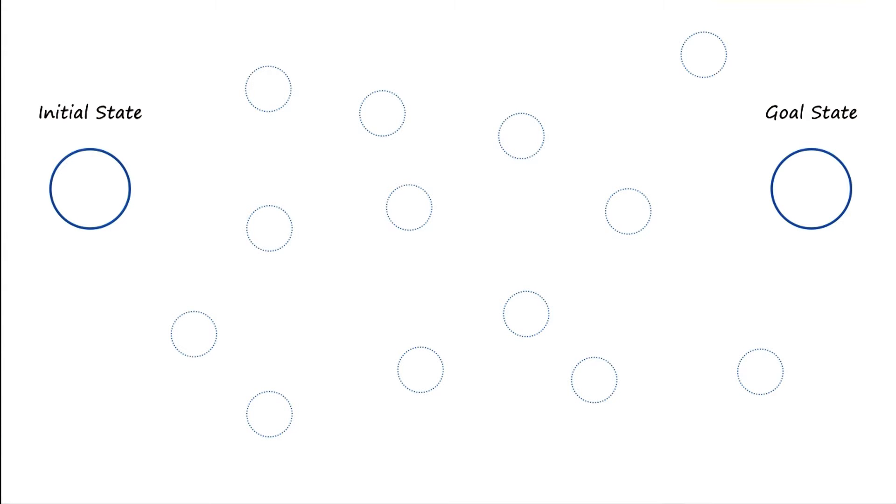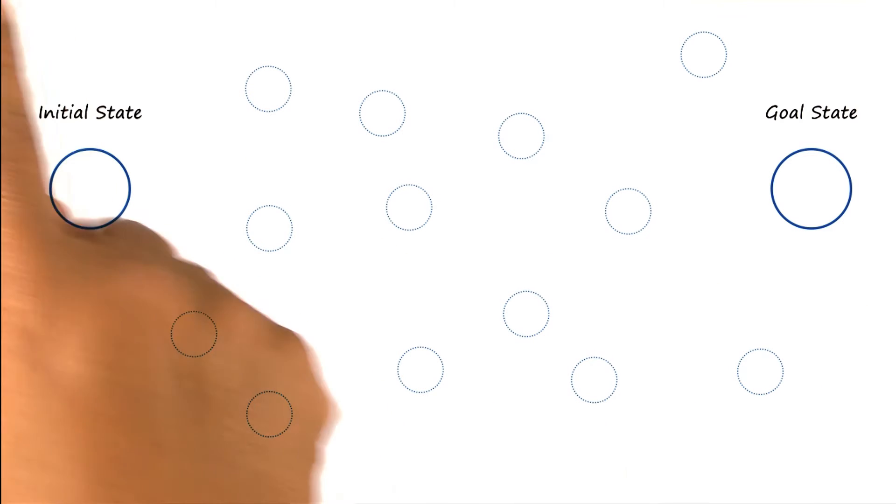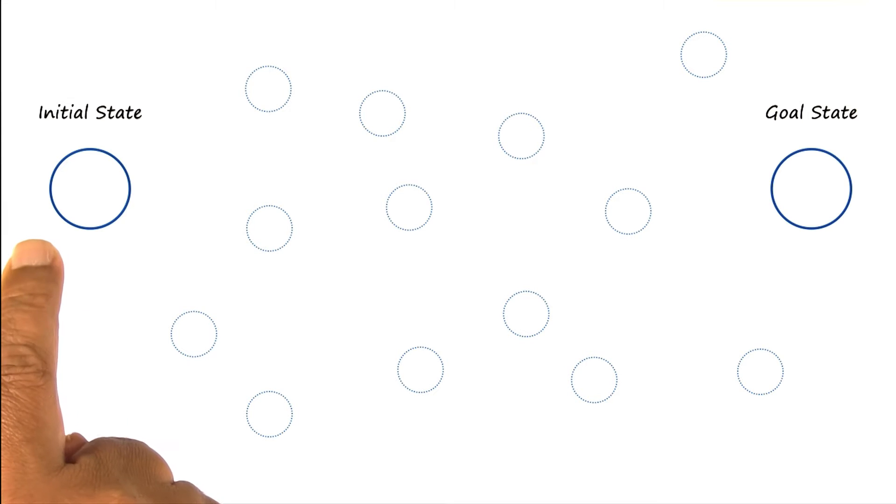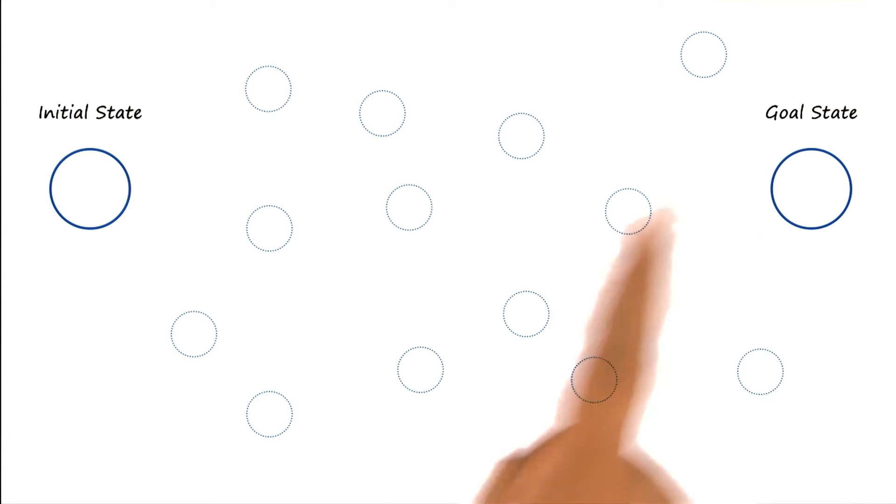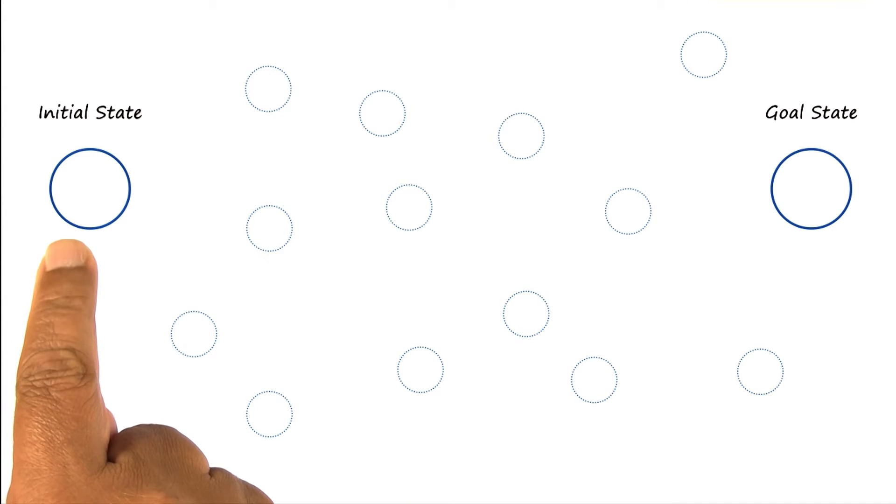We can imagine problem solving as occurring in a state space. Here is the initial state, here is the goal state. And the state space consists of all of those states that could be potentially produced from the initial state by iterative application of the various operators in this microworld.